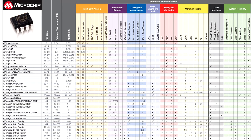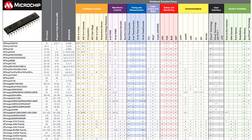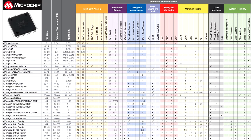AVR microcontrollers are available in three categories. Tiny AVR: less memory, small size, suitable only for simpler applications. Mega AVR: the most popular ones, having a good amount of memory up to 256 kilobytes, higher number of in-built peripherals, and suitable for moderate to complex applications. Xmega AVR: used commercially for complex applications which require large program memory and high speed.